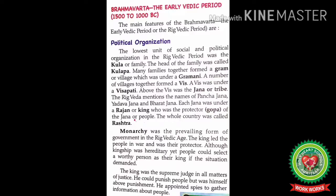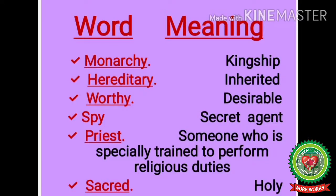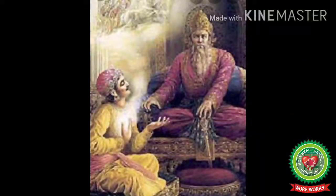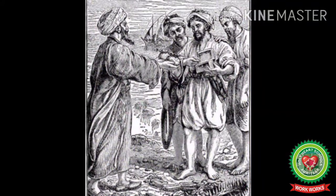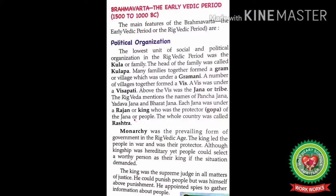The king was the supreme judge in all matters of justice. He could punish people but was himself above punishment. He appointed spies to gather information about people — a spy being a secret agent. So in the Rig Vedic age, the king was the highest authority in matters of justice and employed secret agents to collect information about the people.